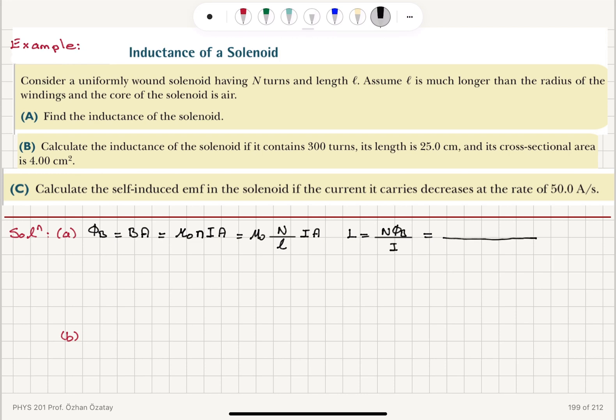So we will have for the inductance mu zero capital N squared current times area divided by length times one over the current. And we will see that the inductance of a solenoid is mu zero number of turns squared area divided by length.